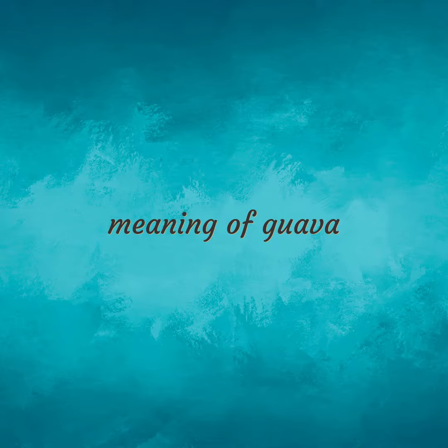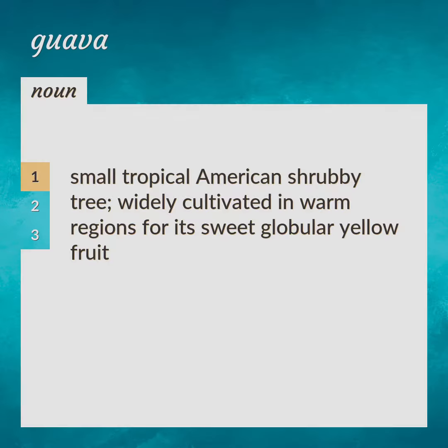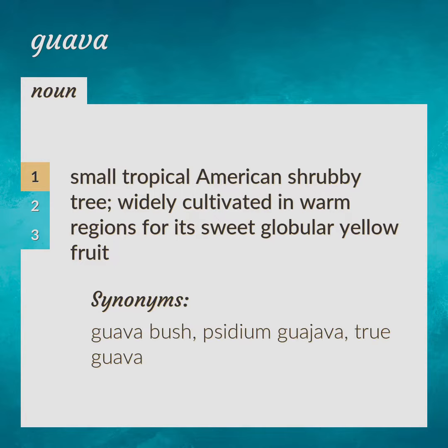Meaning of Guava. Small tropical American shrubby tree, widely cultivated in warm regions for its sweet globular yellow fruit. Guava bush, Psidium guajava, true guava.